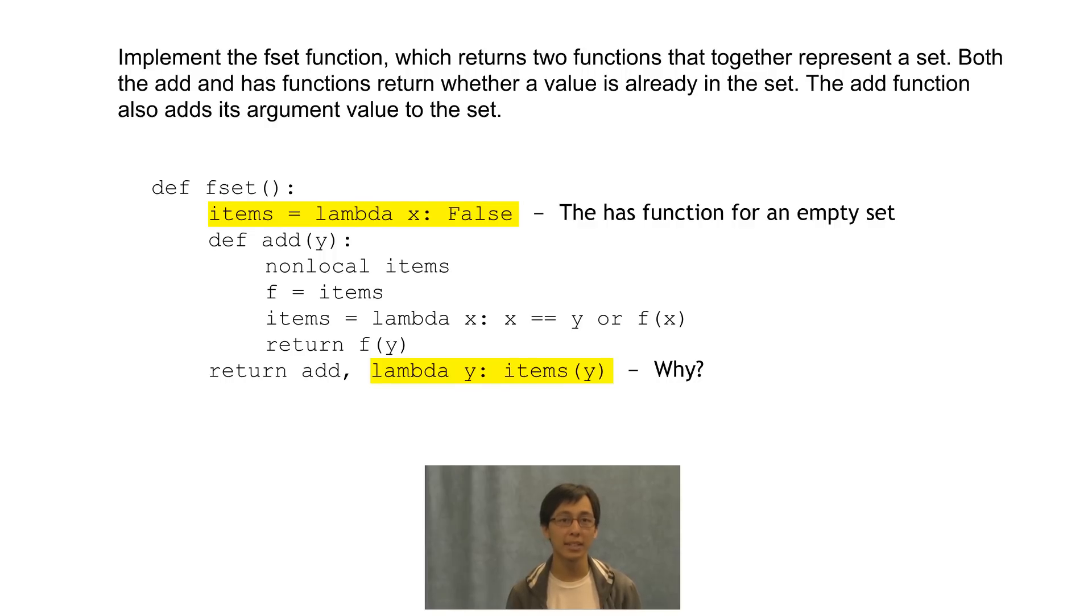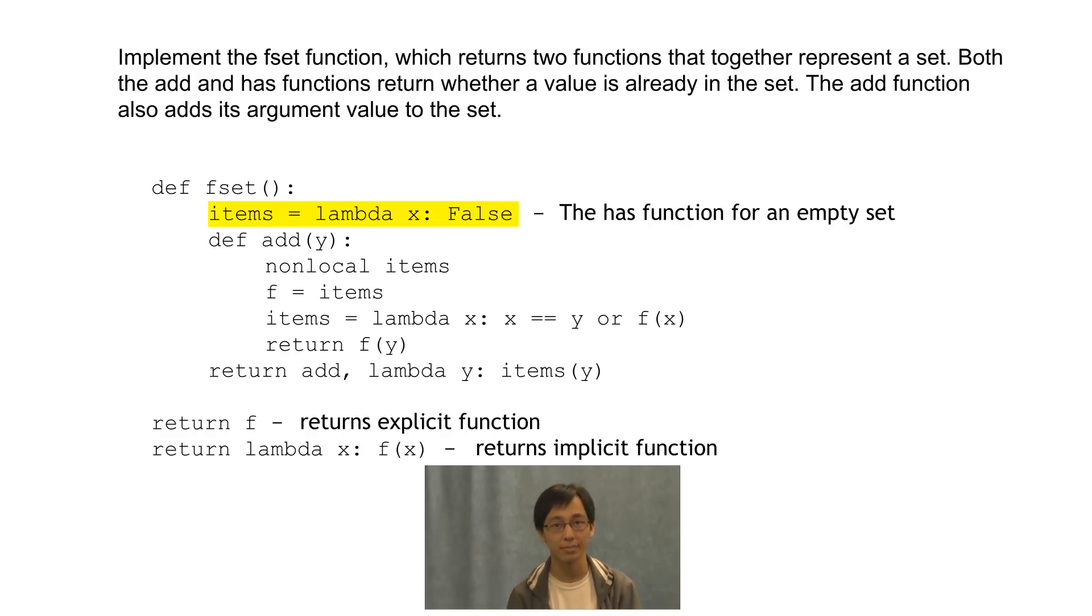You might be wondering why it is that we nest items in a lambda function instead of just returning items. It's important to remember that when we return an object, we return an object. If we returned items as it were, if we added anything, it would make the has function inconsistent because it would always return false. We need to refer to items, but in a way to refer to what items it's referring to rather than what it actually is. That's what this lambda function does. It's a function that searches for a function named items in the environment and then executes it. You can think of this as returning an explicit function while this returns an implicit function. It's a subtlety of the Python language that you're hopefully now aware of.